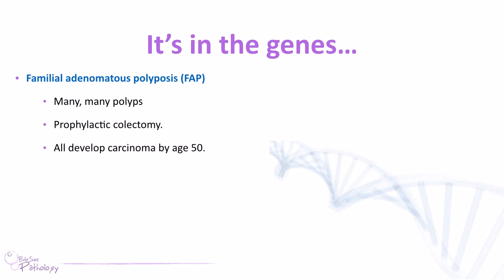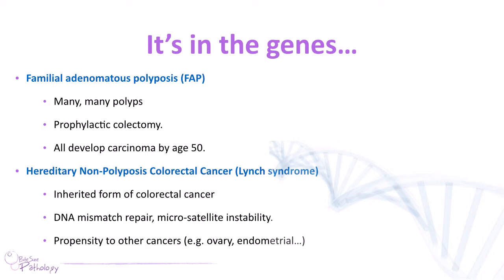The second important genetic condition is hereditary non-polyposis colorectal cancer, called Lynch syndrome. This is an inherited form due to mutations in DNA mismatch repair genes that result in microsatellite instability in the genome, meaning repair processes don't function correctly. As a result, colorectal cells acquire various mutations predisposing to cancer formation. There's also a propensity to forming other cancers — in women, ovarian and endometrial cancers are important. If a patient has a strong family history of colorectal cancer, FAP and Lynch syndrome are the two important conditions to consider.